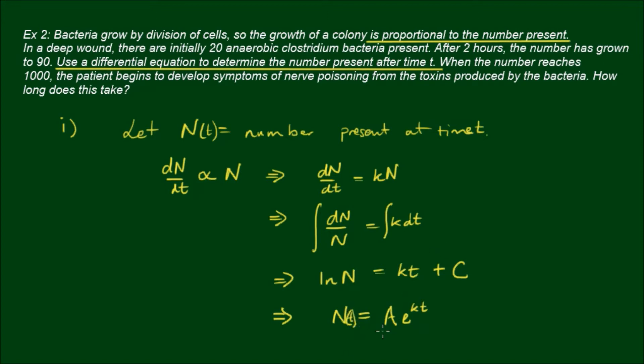A is determined by the initial conditions. There are initially 20 present, so N(0), which equals A, is equal to 20. So we have the coefficient A equals 20.